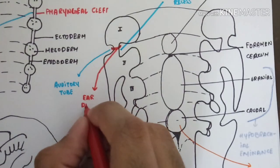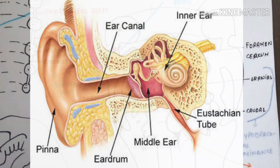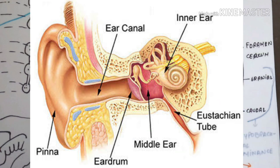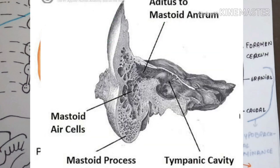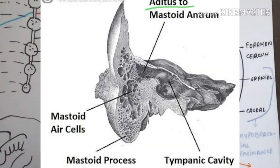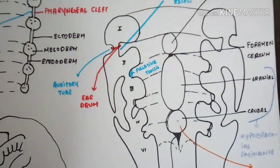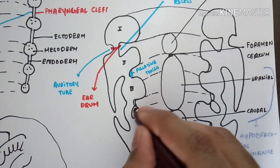The first pharyngeal membrane forms the eardrum, or tympanic membrane. To summarize the ear: the middle ear cavity and the Eustachian tube (auditory tube) and mastoid antrum are formed by the first pharyngeal pouch; the tympanic membrane is formed by the first pharyngeal membrane; and the ear canal is formed by the first pharyngeal cleft. The mastoid antrum is present just above the mastoid bone.